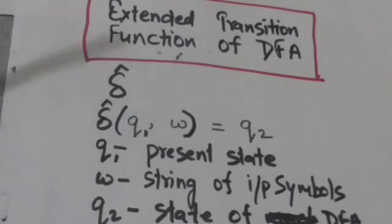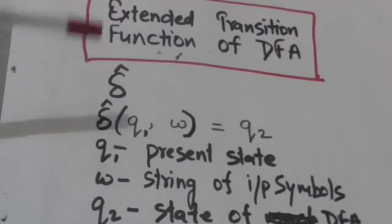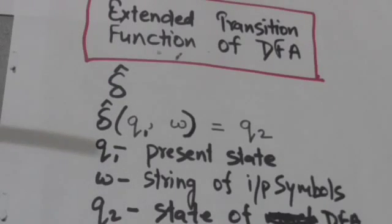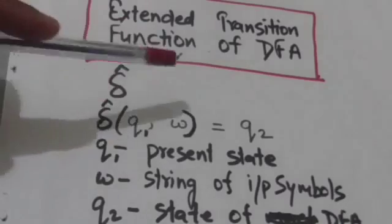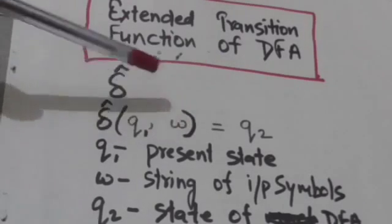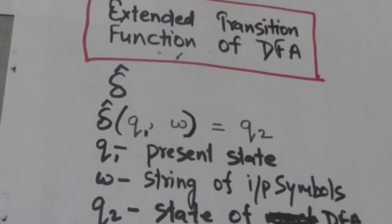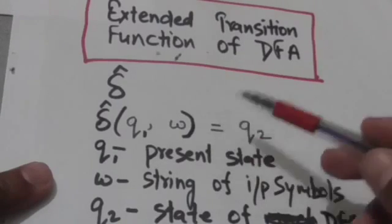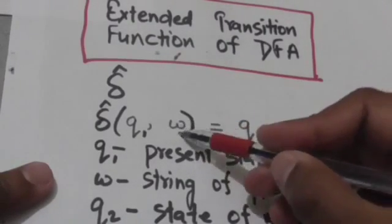In the previous tutorial we studied about the normal transition function. The output of the normal transition function describes where the machine would be after reading a single input symbol from the current state. But in the extended transition function, the second argument is a string of input symbols and its first argument is the present state. Its output would be the state in which the machine would be after reading the string of input symbols from the present state.